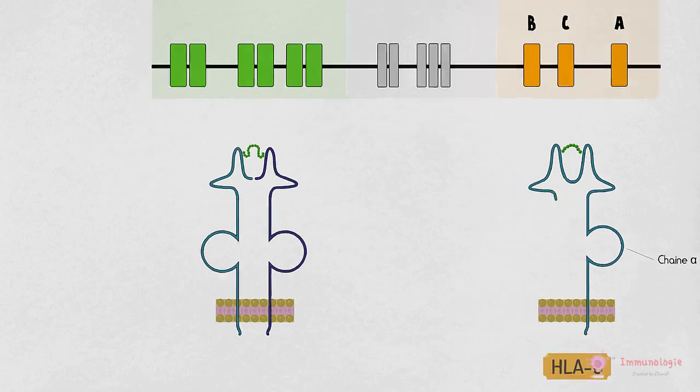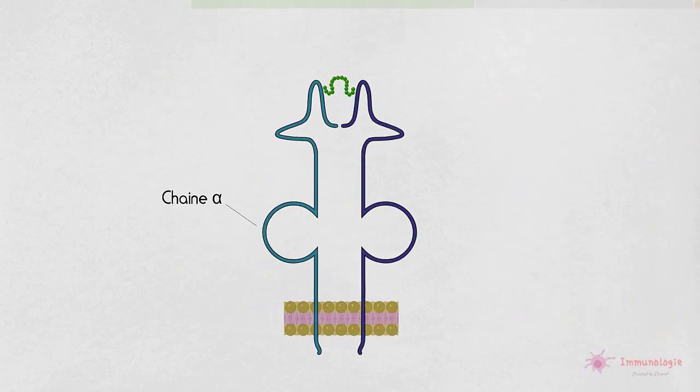Les molécules de CMH de classe 2 sont composées de deux chaînes polymorphes alpha et bêta, qui contribuent toutes deux à créer un site de liaison peptidique.